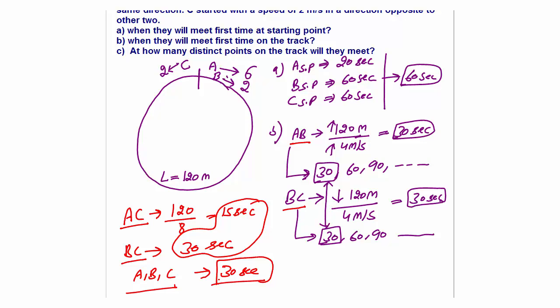Part c asks at how many distinct points on the track they will meet. We calculate two things: starting point meeting and first meeting on the track. The starting point meeting is at 60 seconds, and they first meet on the track at 30 seconds. The first meeting is at 30 seconds and the second meeting — together at the starting point — is at 60 seconds. So the answer is two distinct points, including the starting point.